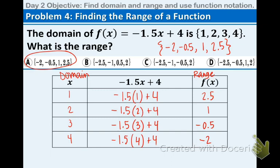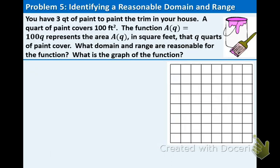And now we're going to jump into problem 5. This is an application real life scenario. You have 3 quarts of paint to paint the trim of your house. A quart of paint covers 100 square feet. The function A(Q) = 100Q represents the area A(Q) in square feet that Q quarts of paint cover. What domain and range are reasonable for the function? What is the graph of the function?